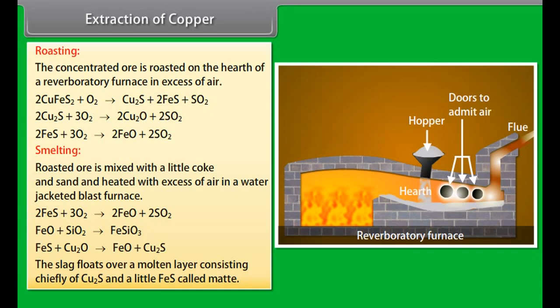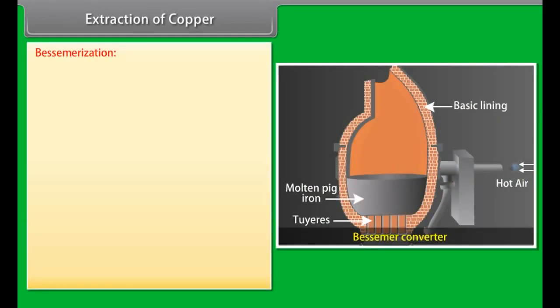Molten iron: Molten iron collects at the bottom of the hearth of blast furnace. The slag being lighter floats over molten iron. Slag is removed through the slag hole.